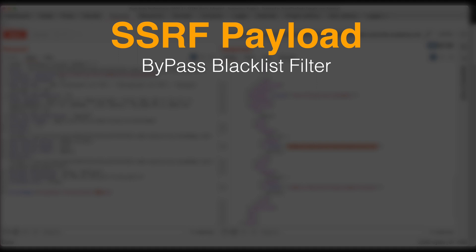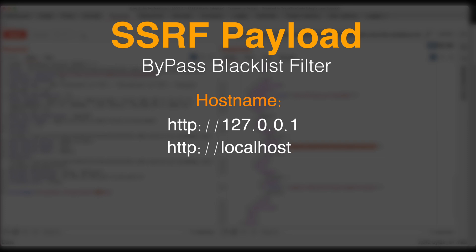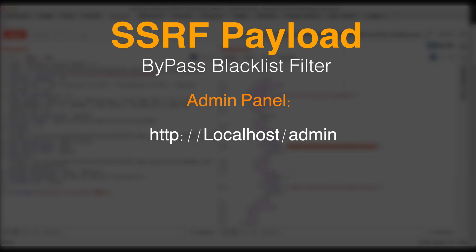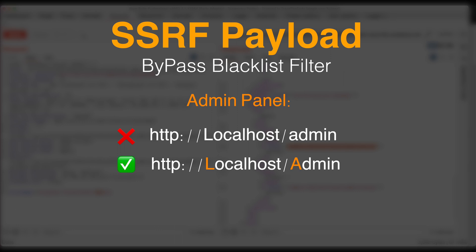Let's recap how we bypassed the application blacklist input filter. First, we tried making an HTTP request using 127.0.0.1 and the localhost domain name — both returned an error, confirming they were in the blocklist. Then, changing the first letter of the hostname to uppercase returned the application homepage. When we attempted to access /admin, that input was also blocked; however, changing its first letter to uppercase gave us access to the admin panel. We bypassed the blacklist filter by simply changing the case of one letter to uppercase for both the hostname and the admin URL. Note that there are several alternative payloads that can also bypass this filter.